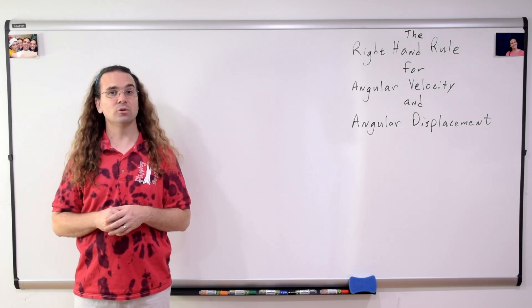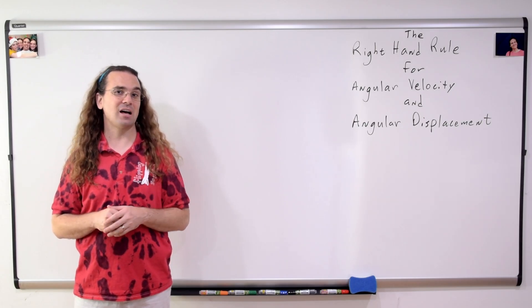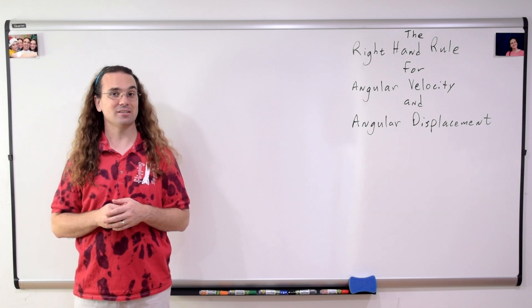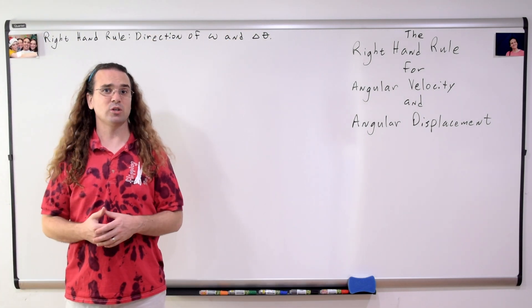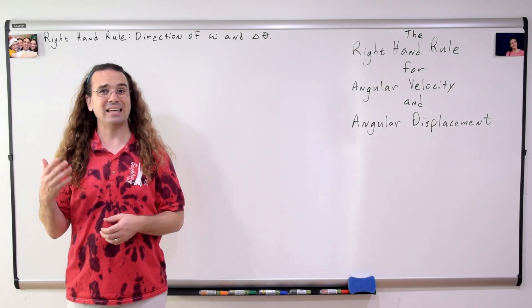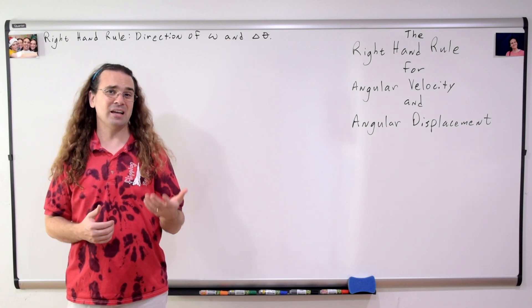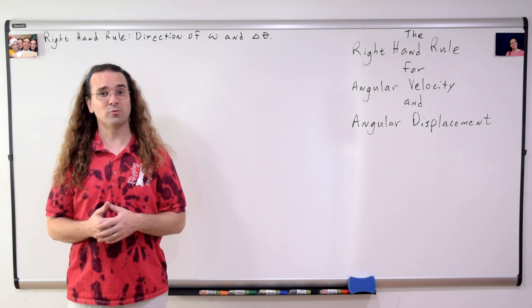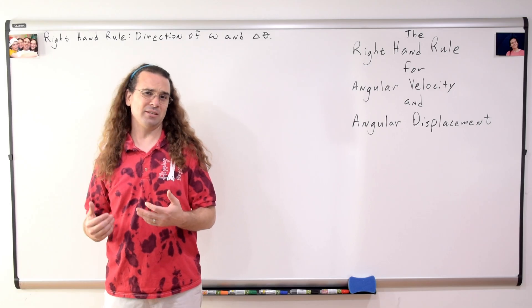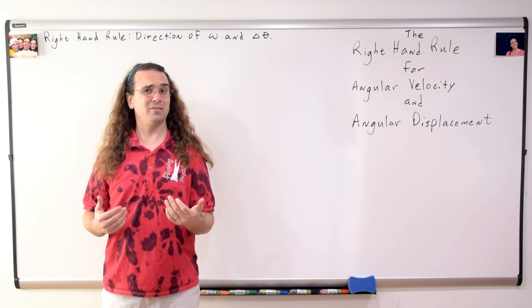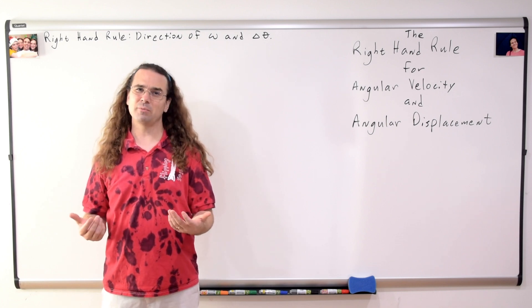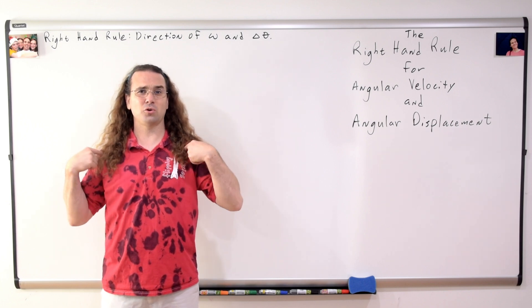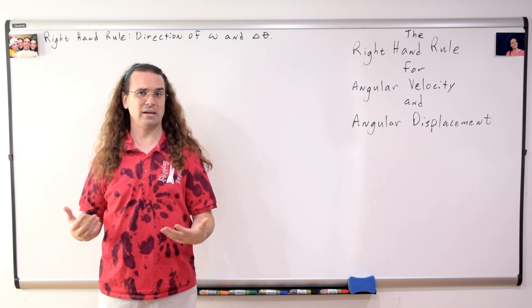We are going to use the right hand rule to define the directions of angular velocity and angular displacement. The first impediment which prevents students from being able to correctly implement the right hand rule is finding your right hand. So please, hold up your right hand. The second impediment is that some students think they are too cool for the right hand rule, feeling they are too cool to actually turn their shoulders and torso while performing it.